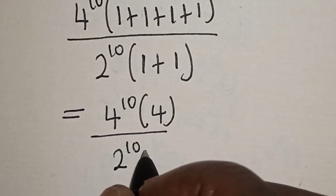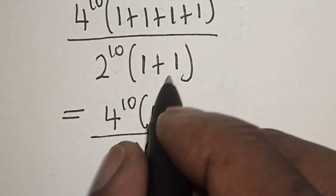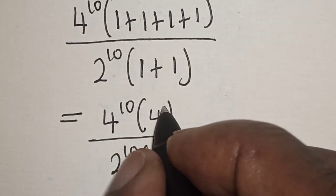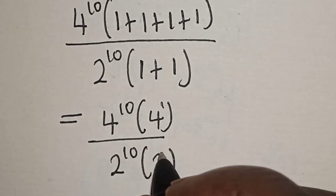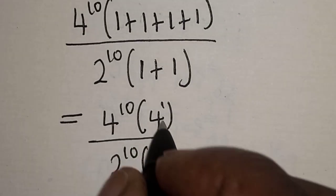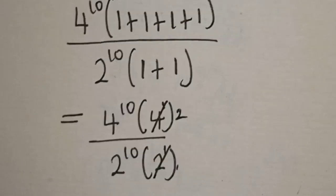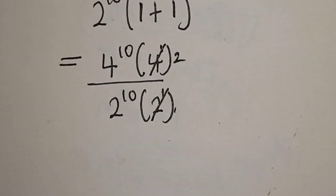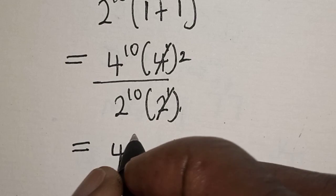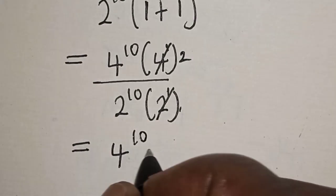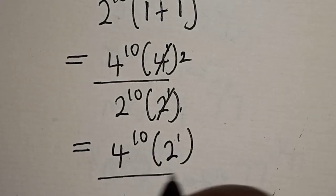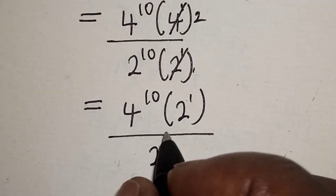This is equal to 4 raised to power 10 bracket 1 plus 1 plus 1 plus 1, divided by 2 raised to power 10 bracket 1 plus 1. That gives us 4 raised to power 10 multiplied by 2 raised to power 1, divided by 2 raised to power 10 multiplied by 2 raised to power 1.